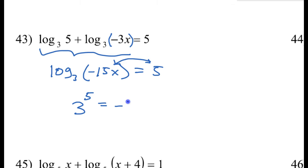Okay, so now to get x by itself, I'm going to divide both sides by negative 15. So x should equal negative 3 to the fifth power over 15.